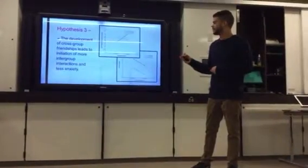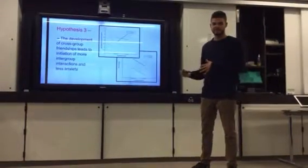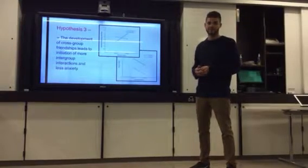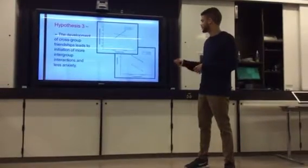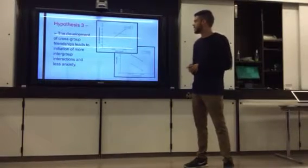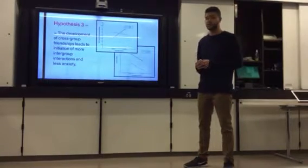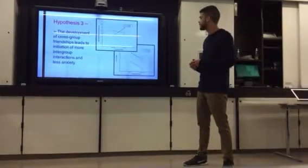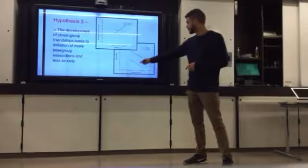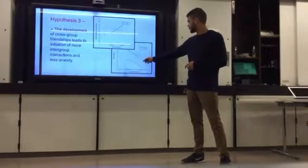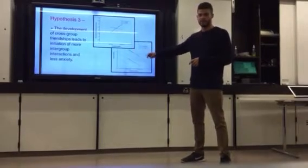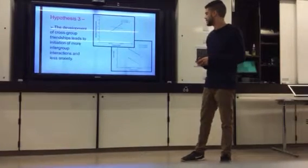And in hypothesis three we saw the effect of the amount of intergroup relationships that they would self-initiate after this forced relationship. We were able to see that those who were in the cross-group relationship were more likely to have more self-initiated cross-group interactions after this trial period than were the same group individuals. And we were also able to see that both for the same group and the cross group, and high and low scores, we were able to see an overall decrease in anxiety as well.